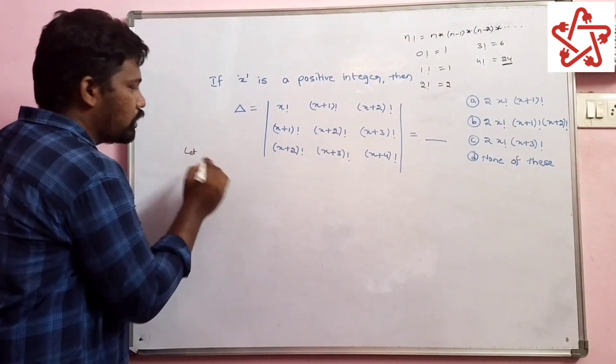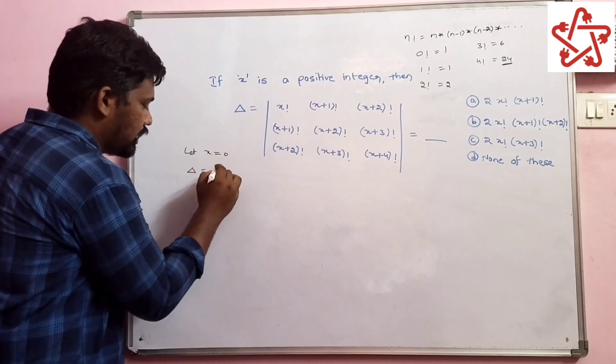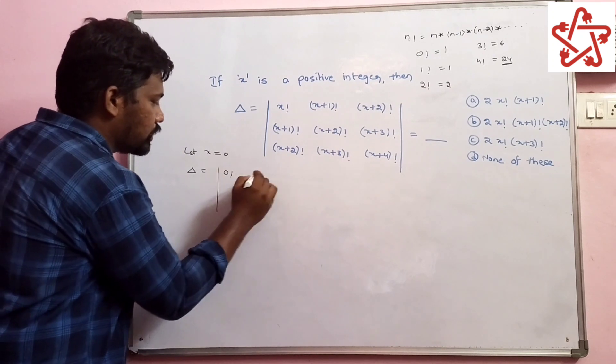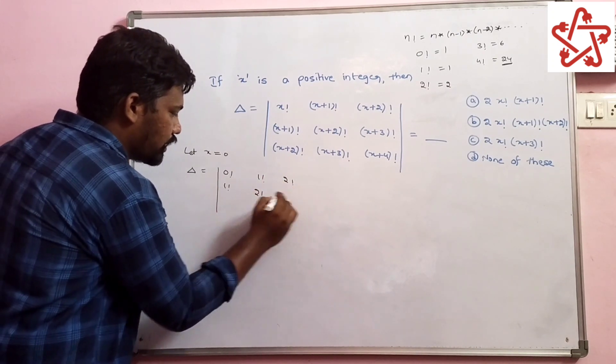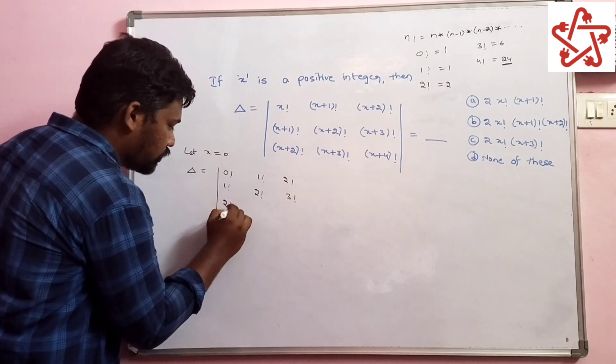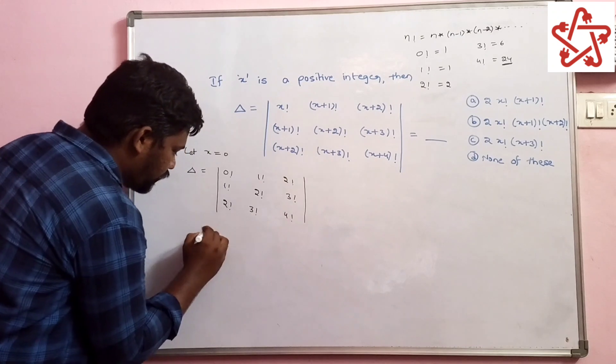Let us consider any value for x. I will consider x equal to 0, then delta equals 0 factorial, 1 factorial, 2 factorial, 1 factorial, 2 factorial, 3 factorial, 2 factorial, 3 factorial, 4 factorial. Now find the determinant.